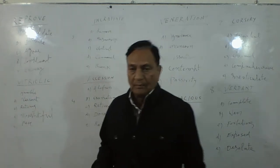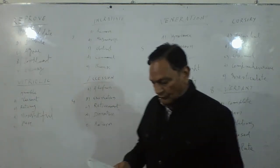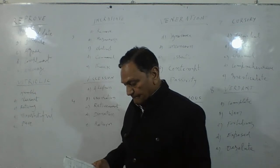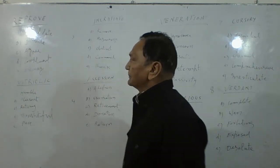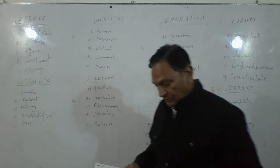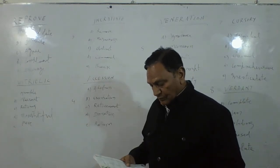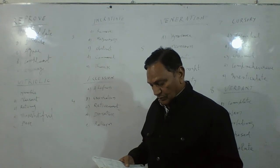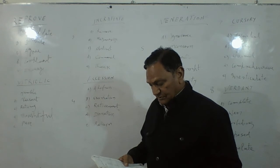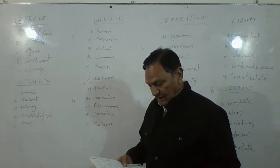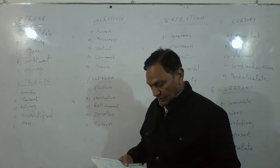The first word is: REPROVE. And we have five options. Option A: Invalidate. Option B: Dissuade. Option C: Agree. Option D: Compliment. And Option E: Encourage.